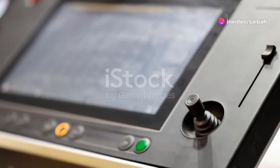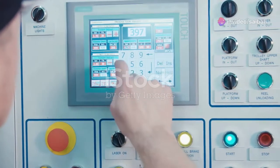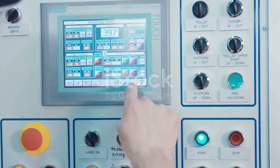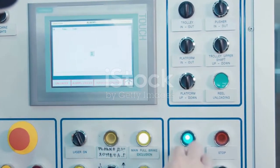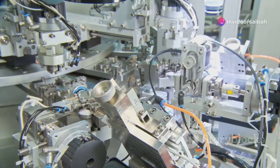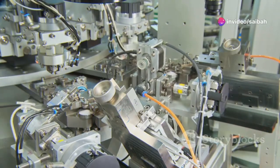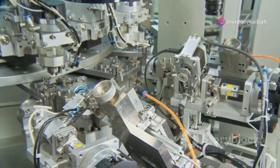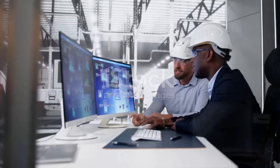On the other hand, HMIs are well-suited for applications that require localized control, operator interaction, and visual representation of specific processes. They are commonly found in manufacturing, packaging, and assembly lines, where operators need to monitor and control individual machines or workstations.